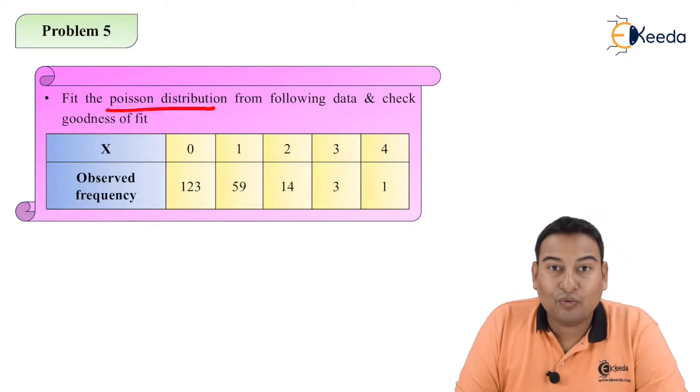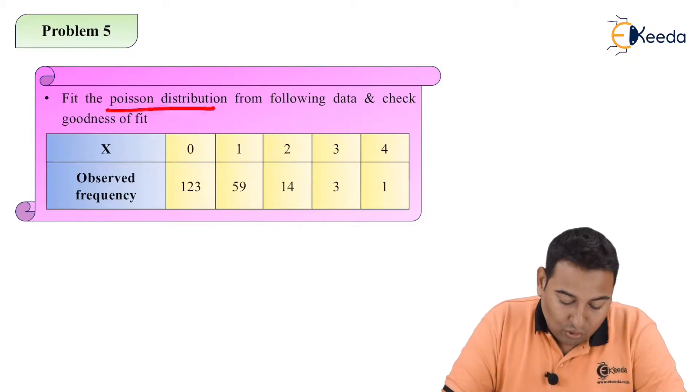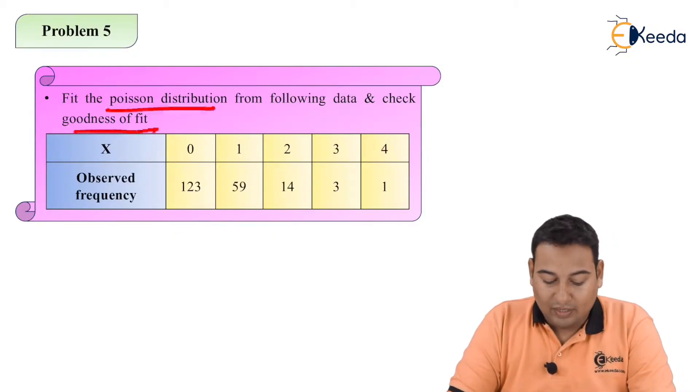In the last video we discussed how to fit a binomial distribution and check goodness of fit. In this particular problem we're going to check Poisson distribution, going to fit it and check goodness of fit.